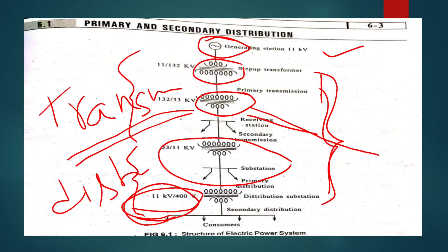In this distribution, there are two types: primary and secondary. In the distribution, there is primary distribution and secondary distribution. The main generating point involves transmission, primary and secondary transmission, and then primary and secondary distribution.